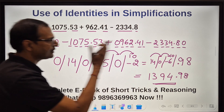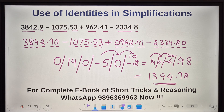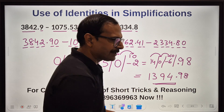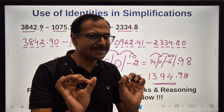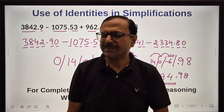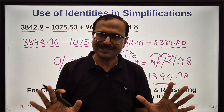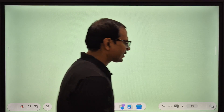You can verify with a calculator — the big calculation gives 1394.98, which is the exact correct answer. A little bit of practice is required but it won't take much time.